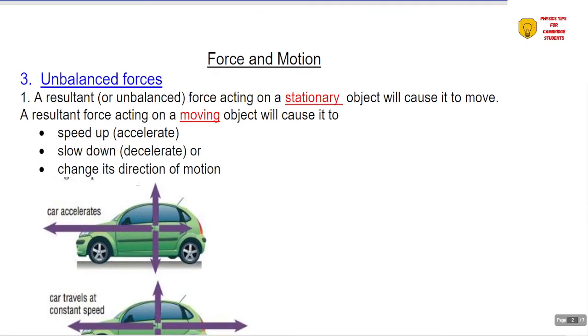Now unbalanced forces. Unbalanced forces now result in a resultant. So a resultant or an unbalanced force acting on a stationary object will cause it to start moving. A resultant force acting on a moving object will cause it to either slow down or to speed up or to change the direction of motion.